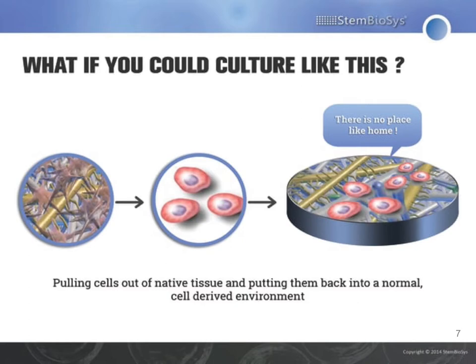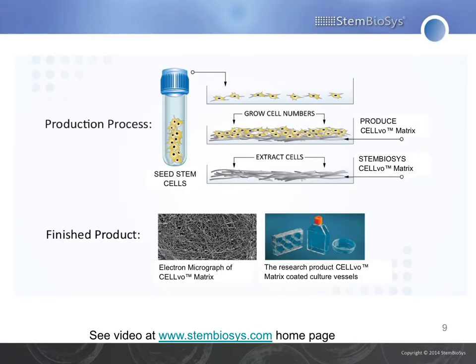We try to turn the traditional paradigm of cell culture on its head. Rather than taking cells out of a native microenvironment and putting them into very simple foreign environments that cells are going to react to by changing, instead we take cells out of their native microenvironment, isolate the cells of interest, and put them right back into a normal cell-derived environment where they can behave as they would in the body. We take human cells, put them into a tissue culture dish, allow them to grow to confluence, and then induce them to secrete a matrix. Once they've done that, we use a non-denaturing detergent to remove those cells.